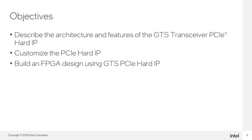By the end of this training, you will be able to describe the architecture and features of the PCI Express Hard IP found in GTS transceivers. You will be able to customize the Hard IP, enabling, disabling, and configuring Hard IP settings for your specific design needs. You will also be able to incorporate the PCI Express Hard IP into your FPGA design by understanding IP interfaces and port connections, as well as including additional IP necessary for a successful compilation.